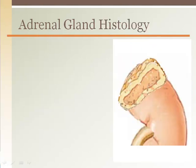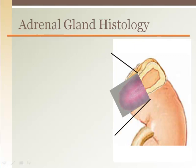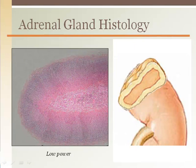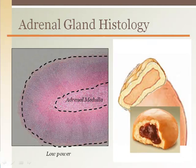Upon taking a slice out of the adrenal gland, we can see the two main regions. The adrenal cortex surrounds the adrenal medulla in the center. Notice how the adrenal cortex is both above and below the medulla, like a jelly donut.